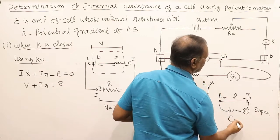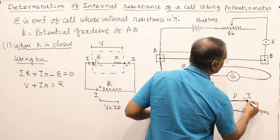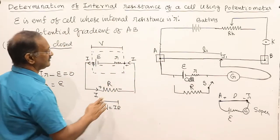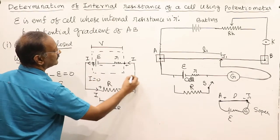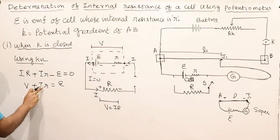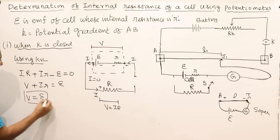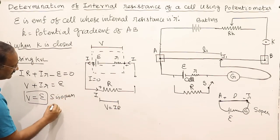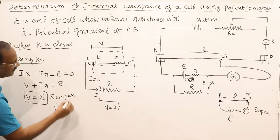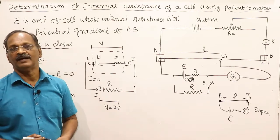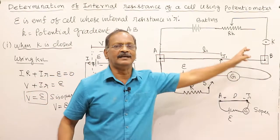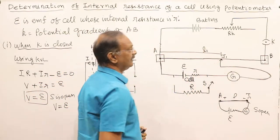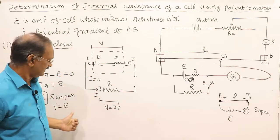When S is open, the EMF of the cell is represented by the potential difference between these two points. When the cell circuit is open, current through it is zero. When I equals zero, I×r equals zero, so terminal potential equals EMF of the cell. Therefore, when S is open and K is closed, the balancing point J1 at length L1 gives the EMF of the cell.